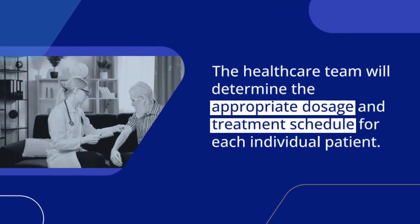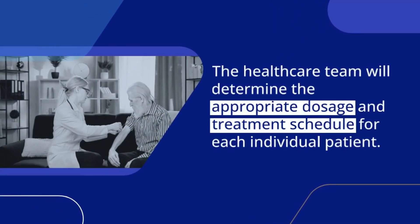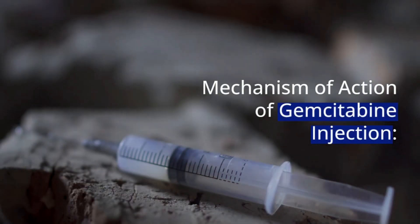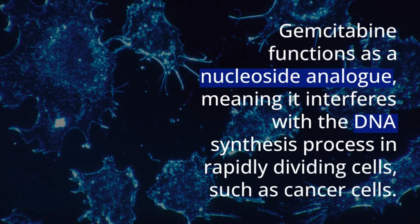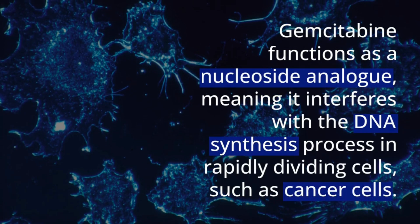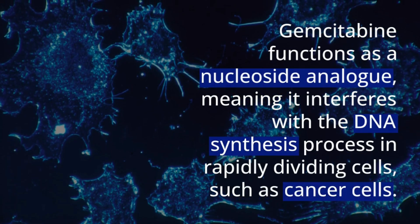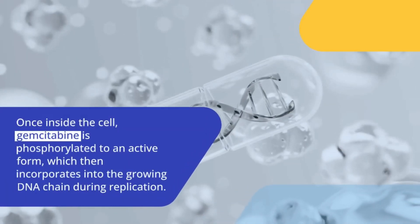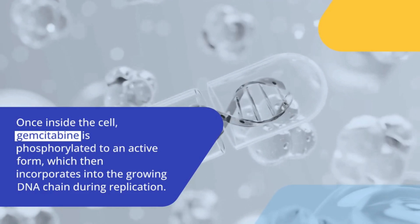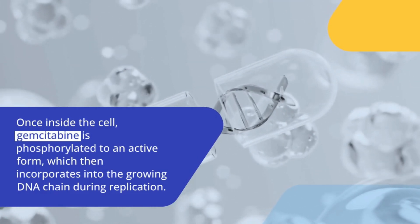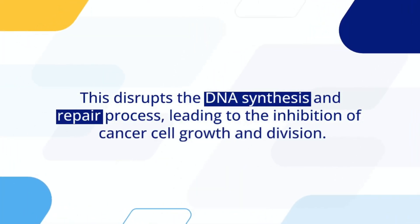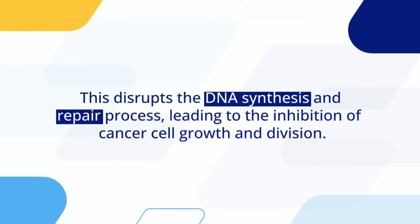The healthcare team will determine the appropriate dosage and treatment schedule for each individual patient. Gemcitabine functions as a nucleoside analog, meaning it interferes with the DNA synthesis process in rapidly dividing cells, such as cancer cells. Once inside the cell, gemcitabine is phosphorylated to an active form, which then incorporates into the growing DNA chain during replication. This disrupts the DNA synthesis and repair process, leading to the inhibition of cancer cell growth and division.